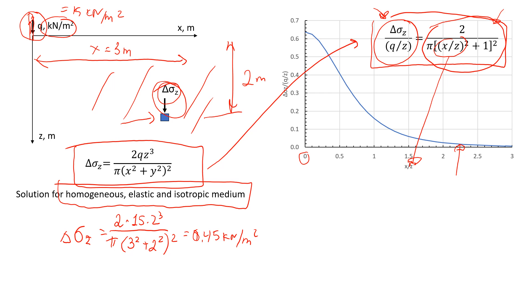Now we'll see how to use this curve to solve the problem. We only need to know the ratio x/z, which is x = 3 meters divided by z = 2 meters, giving us 1.5.